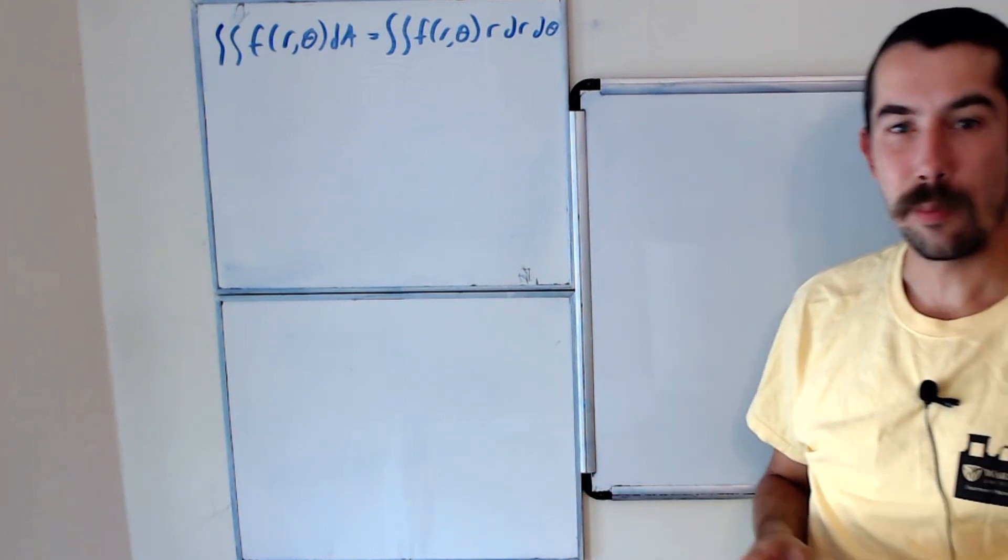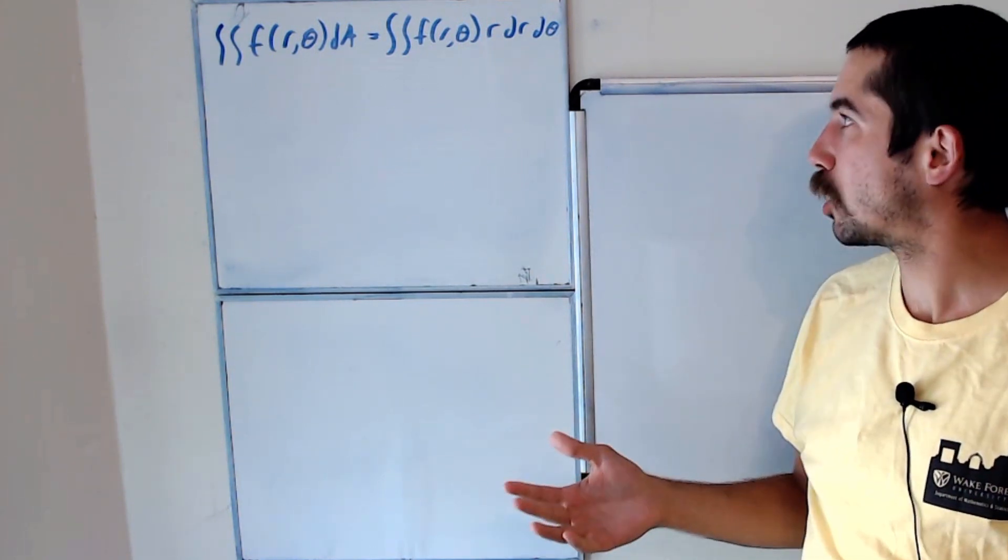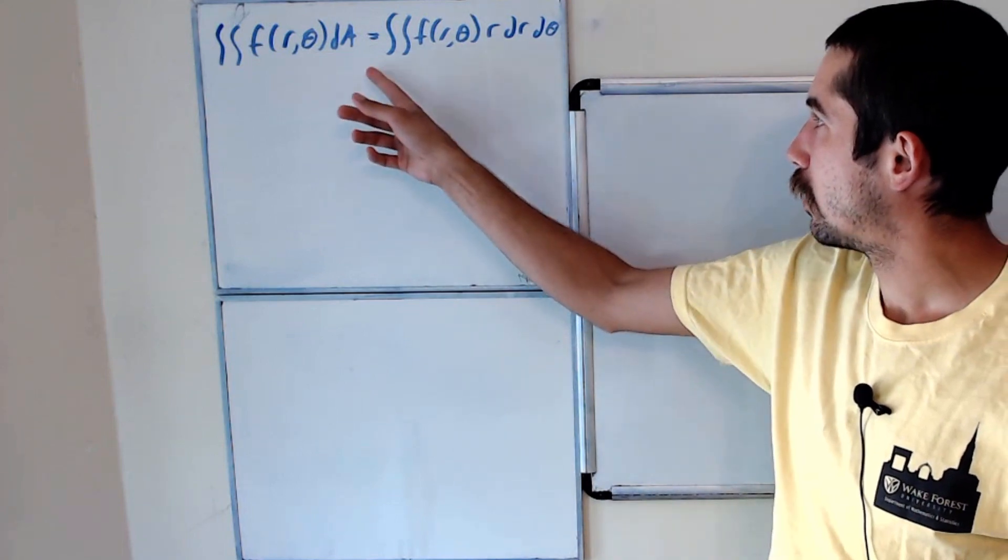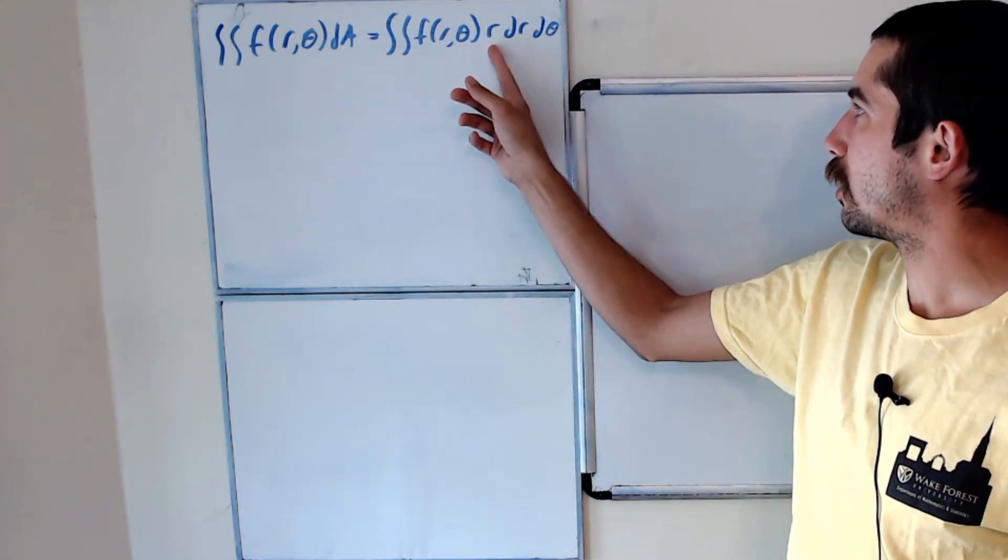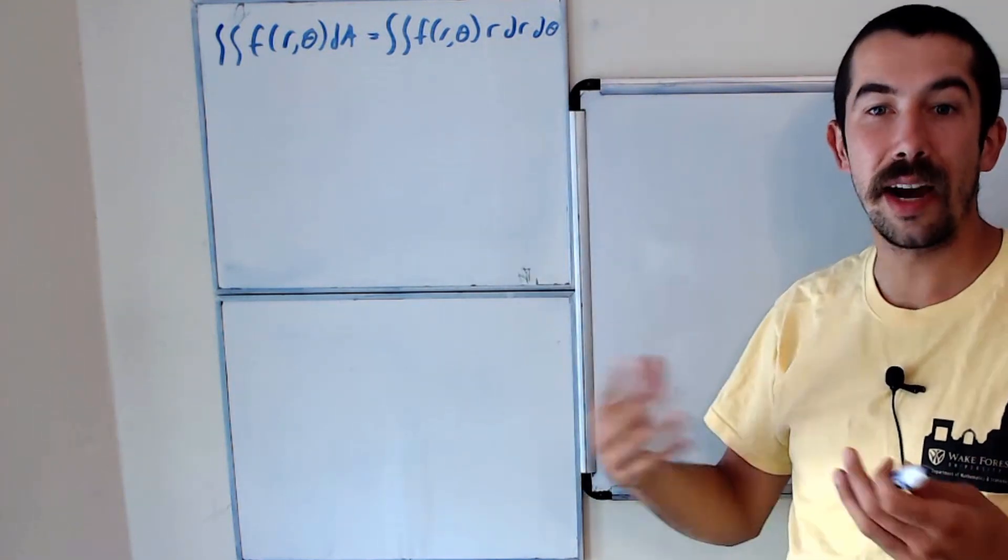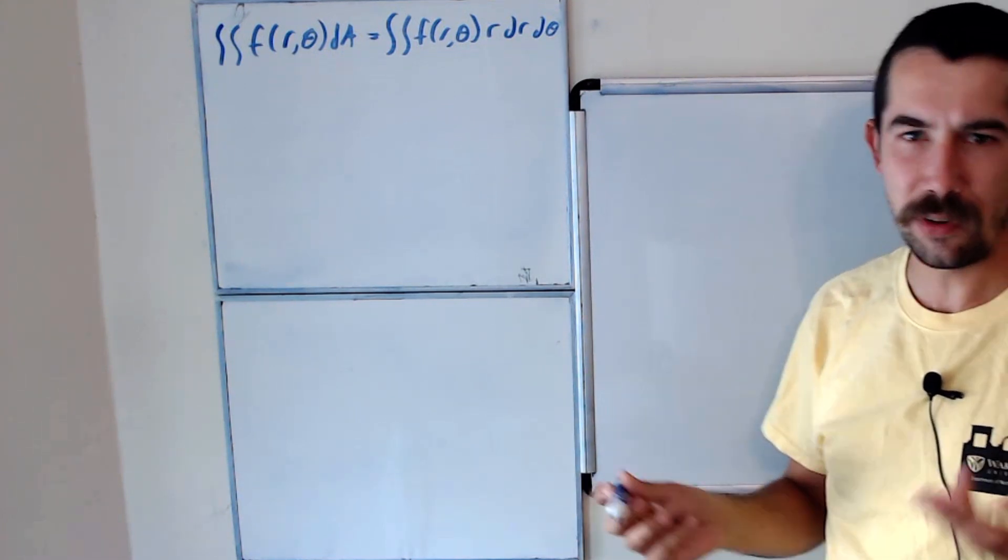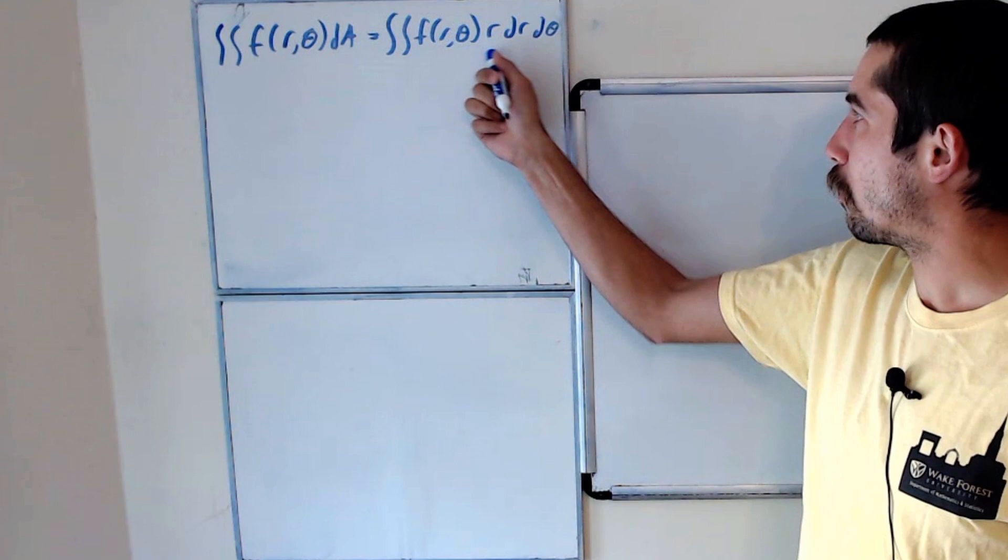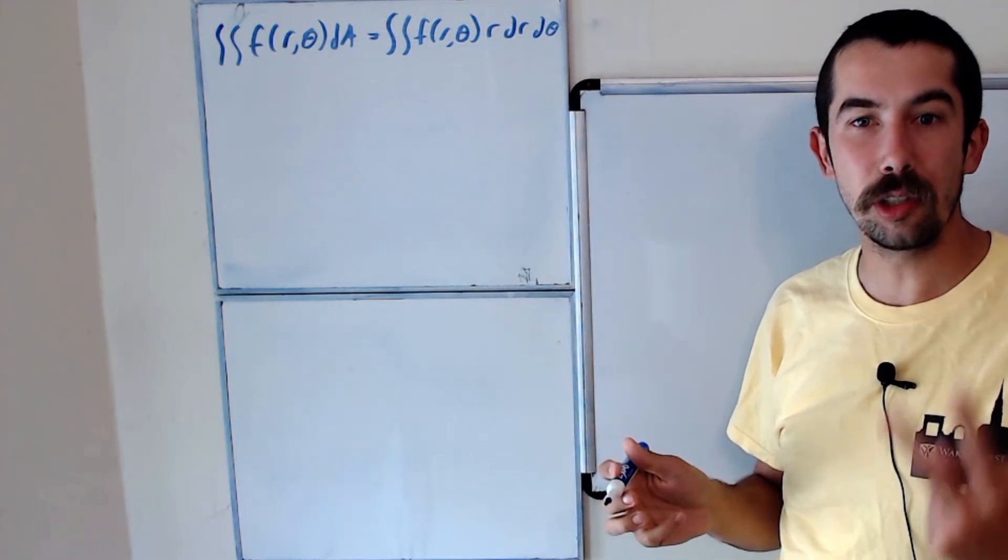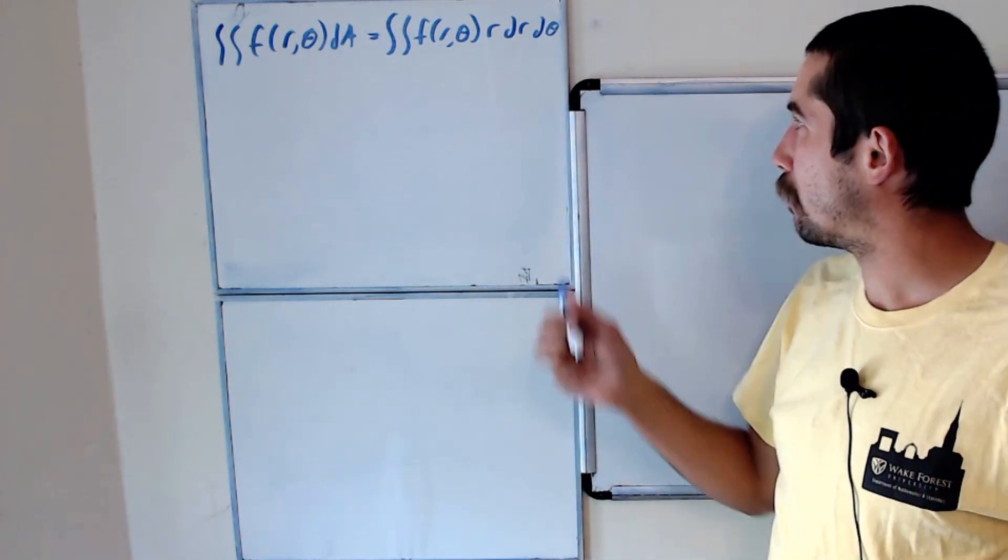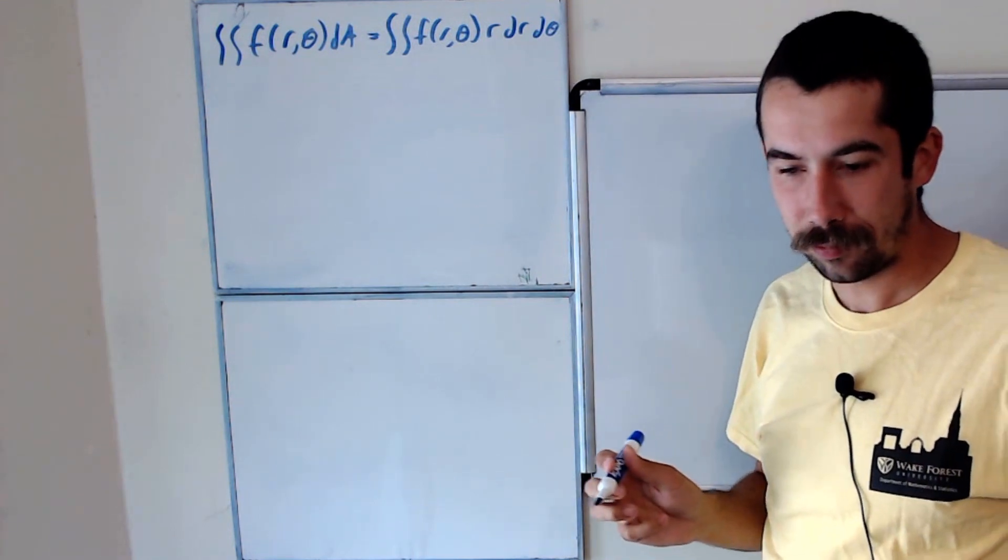The other day, we evaluated a double integral where we had to switch to polar coordinates. When you switch to polar coordinates, you introduce another factor of r into the integral, and some of you weren't sure where the r came from. So I figured I'll explain where the r comes from today, and I'll show you two different ways to determine this.